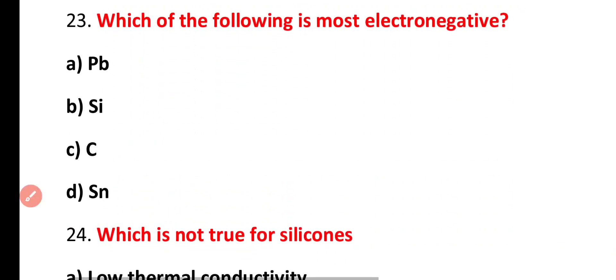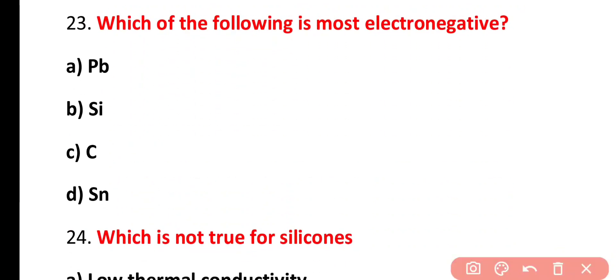Question 23. Which of the following is most electronegative? Lead, silicon, carbon or tin? Correct answer is option C. In Group 14, the most electronegative is carbon. Electronegativity decreases from top to bottom in the group.